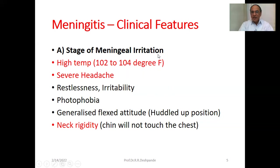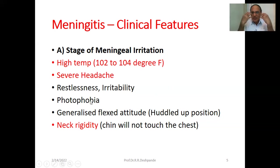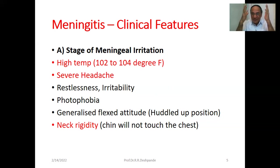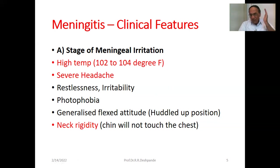Clinical features in detail — three stages. The first stage is meningeal irritation. There is a higher temperature of 102 to 104 degrees Fahrenheit, a bursting headache, restlessness and irritability, and photophobia — the patient cannot tolerate light, closes his eyes, and cannot look toward the light. There is a generalized flexed attitude called the huddled-up position. Neck rigidity is present — the chin will not touch toward the ears and the neck cannot be flexed. This is a very important symptom for meningitis.